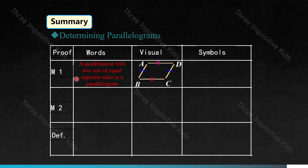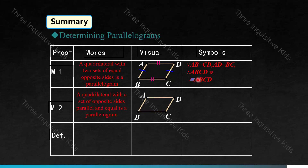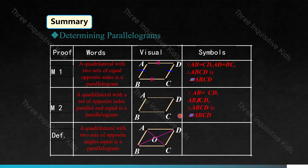Method one: a quadrilateral with two sets of equal opposite sides is a parallelogram. If AB equals CD and AD equals BC, therefore ABCD is a parallelogram. Method two: a quadrilateral with a set of opposite sides that are both parallel and equal is a parallelogram. Since AB equals CD and AB is parallel to CD, therefore ABCD is a parallelogram. Method three: a quadrilateral with two sets of opposite angles equal is a parallelogram. Since angles A and C are equivalent and angles B and D are equivalent, then ABCD is also a parallelogram.